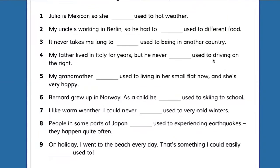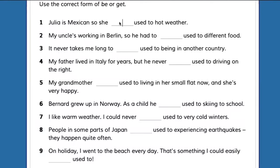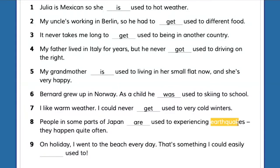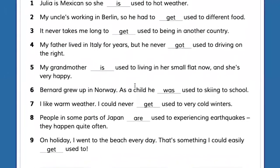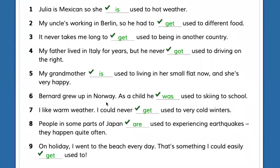Let's hear from Marcelo. 'Julia is Mexican, so she's used to hot weather' — yes, very good. Or 'is used to spicy food or jalapeños.' Number two: 'My uncle's working in Berlin, so he had to get used to different food.' Wonderful. And about earthquakes — since they happen often there, people 'are used to experiencing earthquakes.' Number nine: 'On holiday, I went to the beach every day. That's something I could easily get used to.' All answers are correct. Thank you and goodbye.